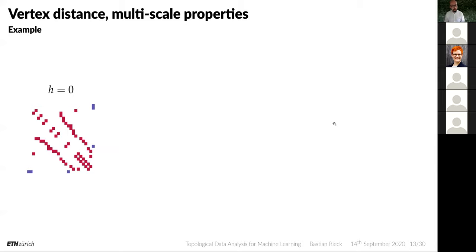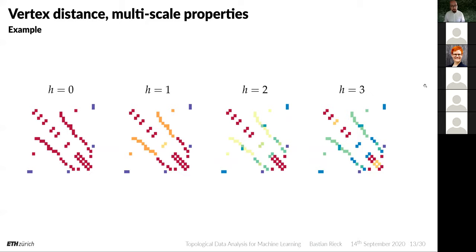Depending on how many relabeling iterations we perform, the metric becomes more or less sensitive to neighborhood distances. With zero iterations (h=0), you have a very coarse metric — either zero or one depending on whether a neighboring node has the same label. Increasing iterations yields much richer information, enabling a more nuanced view of the graph for classification.